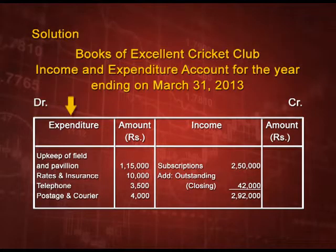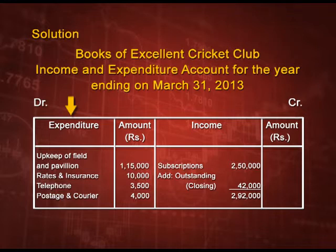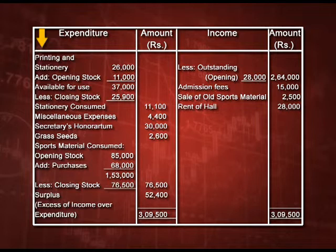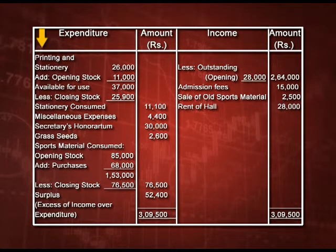The first item is upkeep of field and pavilion — this is of revenue nature, so it is a revenue expenditure and we have transferred it to the expenditure side. Then rates and insurance — this is also revenue expenditure. Telephone expenses rupees 3500, postage and courier charges rupees 4000. Then printing and stationery rupees 26000: we have added the opening stock of rupees 11000 and deducted the closing stock of rupees 25900, arriving at the stationery consumed figure of rupees 11100.